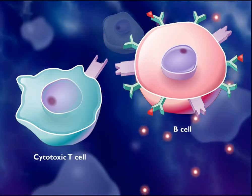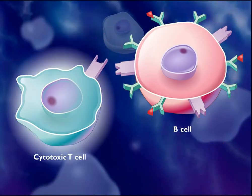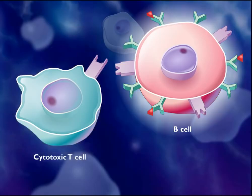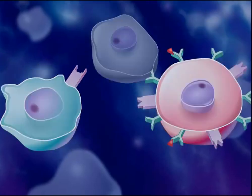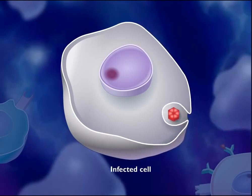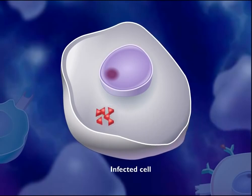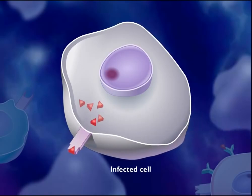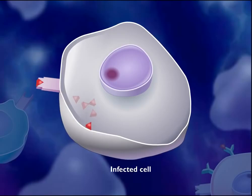The immune response from this point follows two paths: one using cytotoxic T-cells and one using B-cells. Normal cells of the body that become infected can also digest some of the pathogens and display antigen fragments on their cell surfaces.